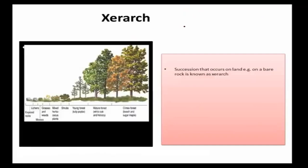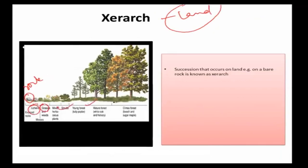Hydrarch happens in water. Where will xerarch be? In our land — on rock, where there was nothing. It starts with lichens, then grasses, then scrubs, then forest, then mature forest. So this is the succession on land.